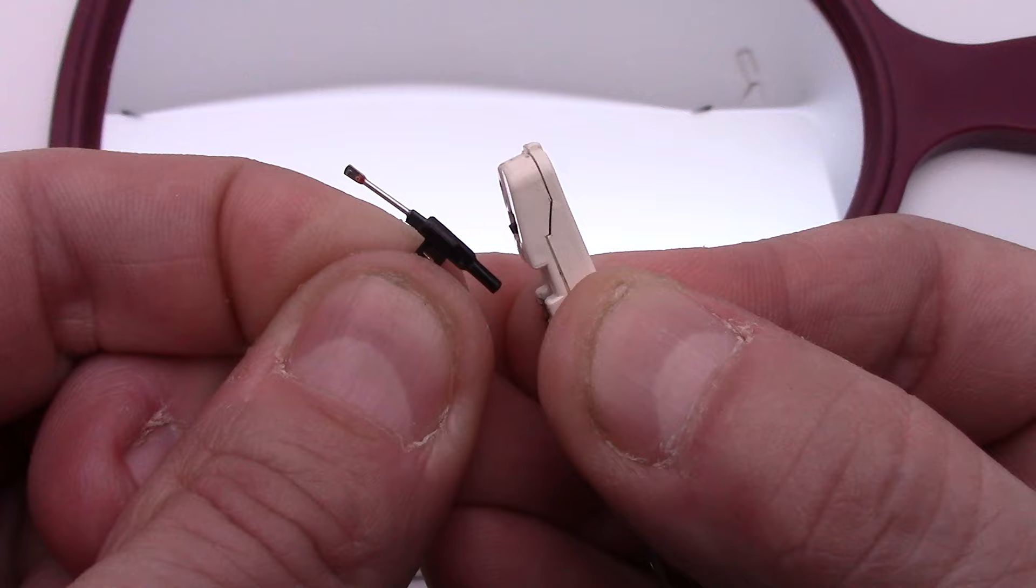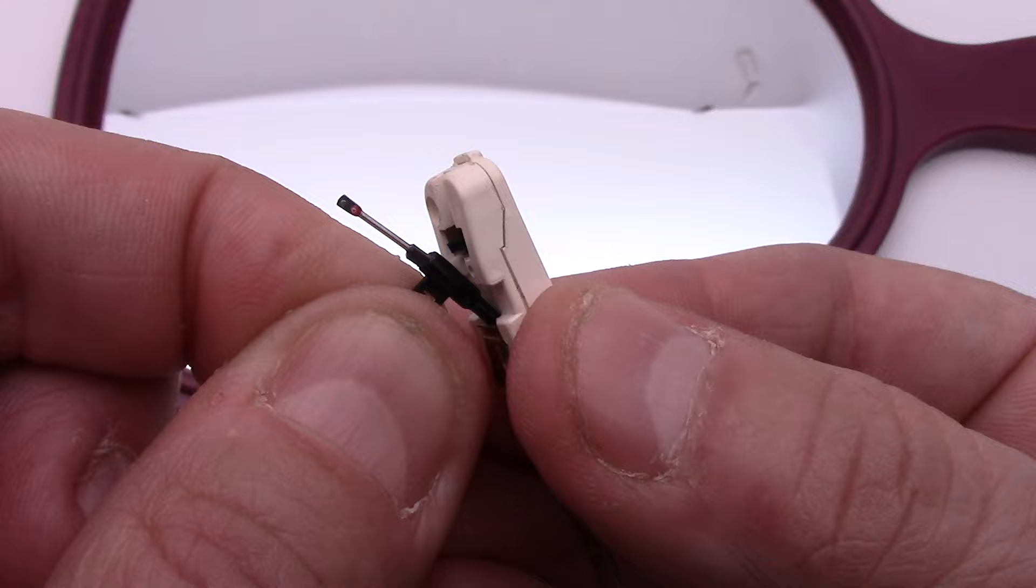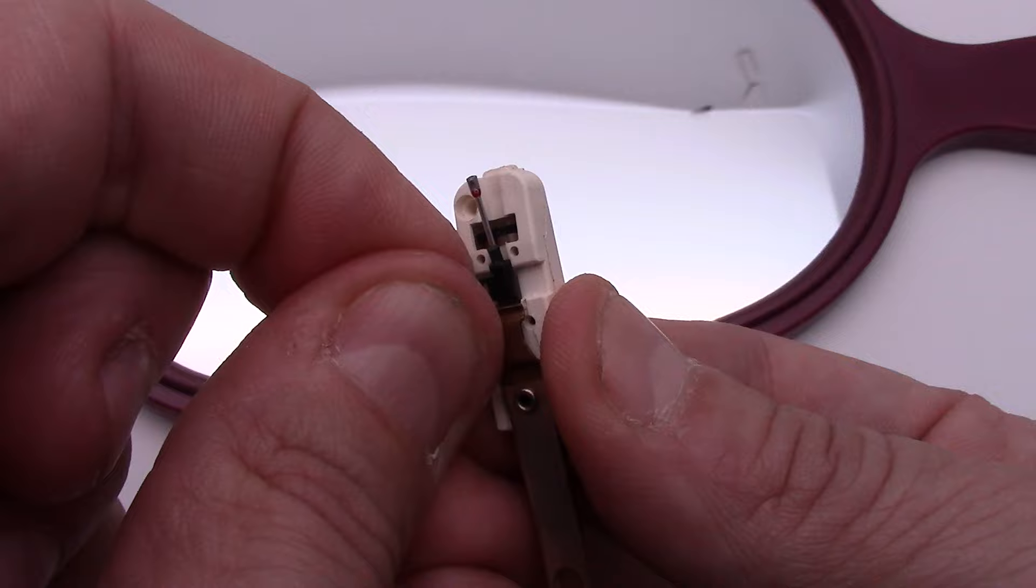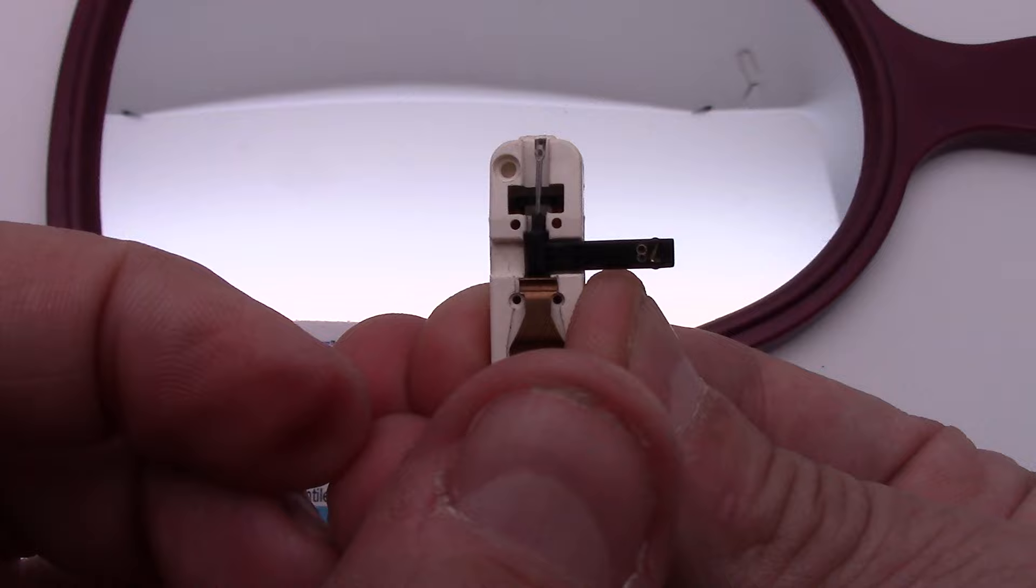That's to get it out from underneath this retainer clip. Then you want to hook it right back in the same manner. Again, forward and slightly down at the same time. When you hear that nice click, you know you've done it right. That's the sound you're looking for.